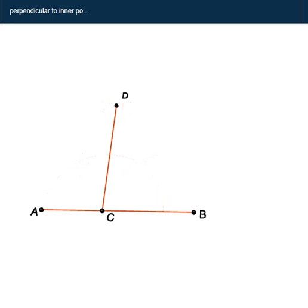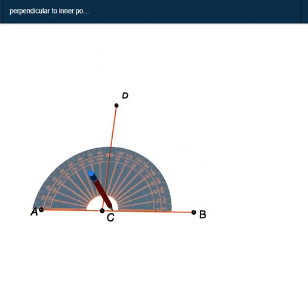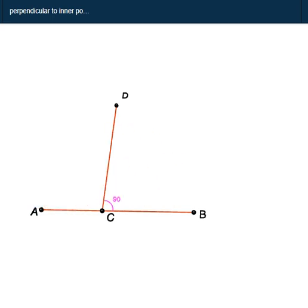Perpendiculars make 90-degree angles. So we measure, and yes, it is a 90-degree angle. This clearly shows how we can take a perpendicular on a line through any point.